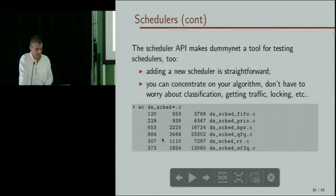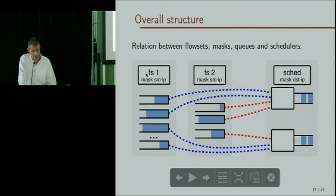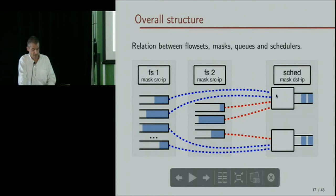The overall structure of this revised DummyNet links together pipes, flow sets, and queues. Flow set objects dynamically create queues according to their configured mask. Scheduler objects dynamically create scheduler instances according to the scheduler's mask. Packets from multiple flow sets can feed into one instance of the scheduler, which is created dynamically. This architecture allows very flexible composition of all components.